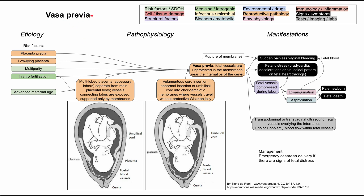This is a short video on vasa previa, a condition where the fetal vessels are unprotected in the membranes near the internal os of the cervix, which can lead to them being damaged and bleeding. I'll briefly talk about the etiology, the pathophysiology, and the manifestations of vasa previa.